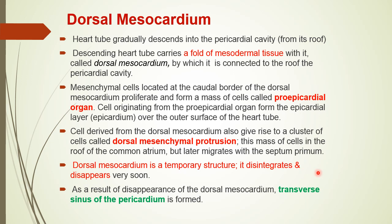When the dorsal mesocardium finally disappears, anatomically the transverse sinus of the pericardium is found, which lies between the venous and arterial ends of the heart. In the adult, it is represented by the sinus or space between the aorta and pulmonary trunk.